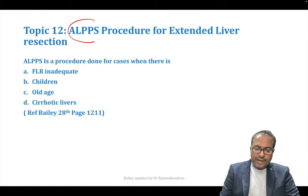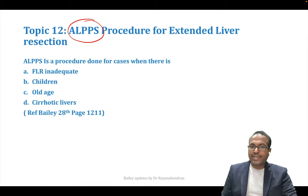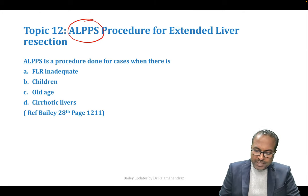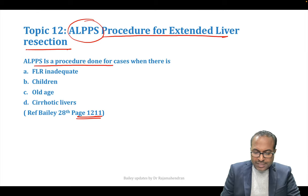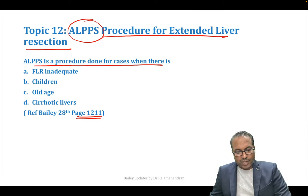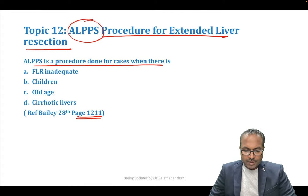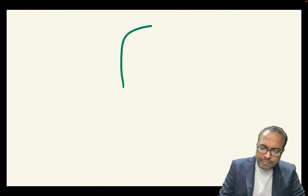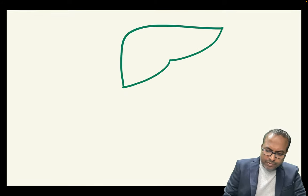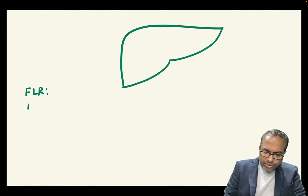ALPPS procedure — highly expected for INISET SS and PG exams. Page 1211 of Bailey. ALPPS is done when FLR (Future Liver Remnant) is inadequate. For a normal liver, FLR should be 25%. For a cirrhotic liver: 40%. For a NASH liver: 30%. This is to prevent post-operative liver failure.